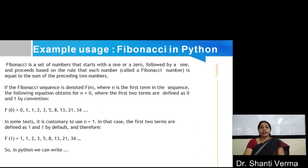Now, let's take an example of the Fibonacci series. Fibonacci series is a set of numbers that starts with 1 or 0 followed by a 1 and proceeds based on the rule that each number is equal to the sum of the preceding two numbers.